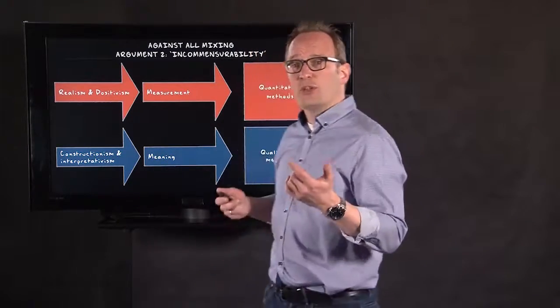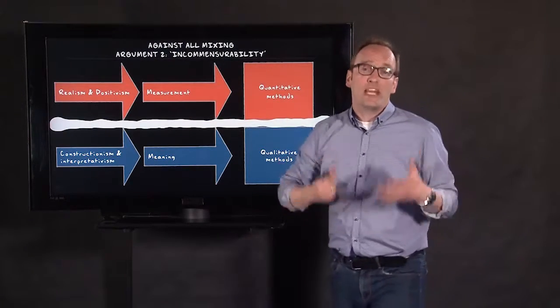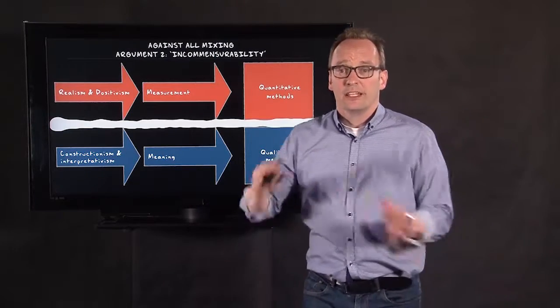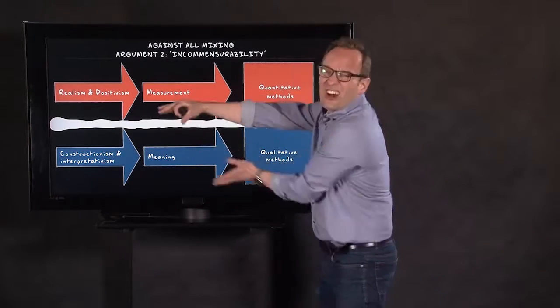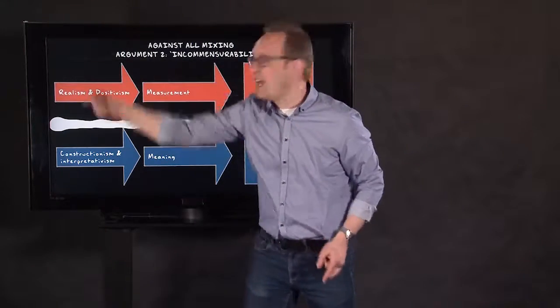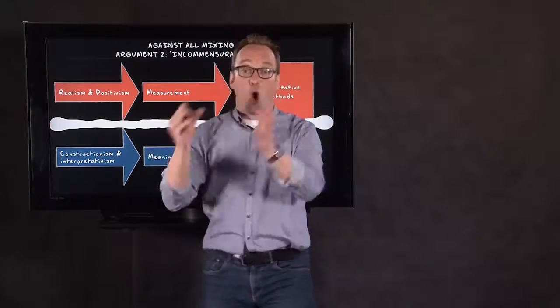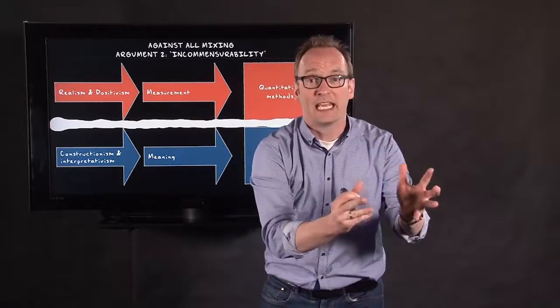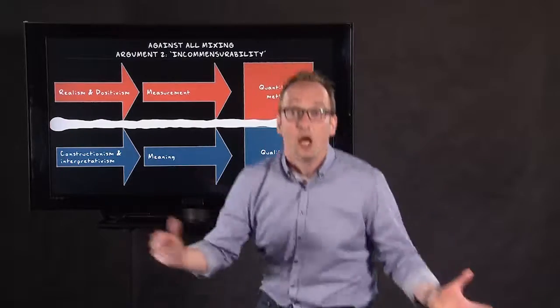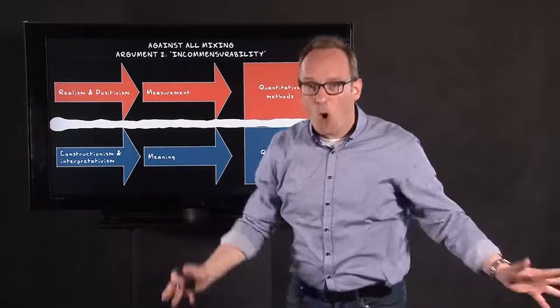If you add a second argument, you would say that these cannot talk to each other. There's the issue of incommensurability. There are two paradigms and these paradigms can't really talk to each other. If you say that there's a reality out there, you can't say the reality is socially constructed. And if you say it's all about measurement, you can't say it's all about meaning. So you can't mix those methods. At least that's what the people say that are against all mixing.